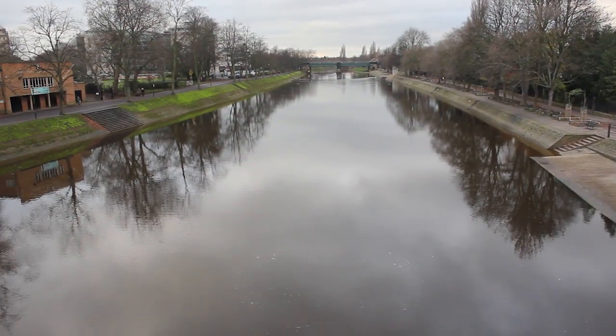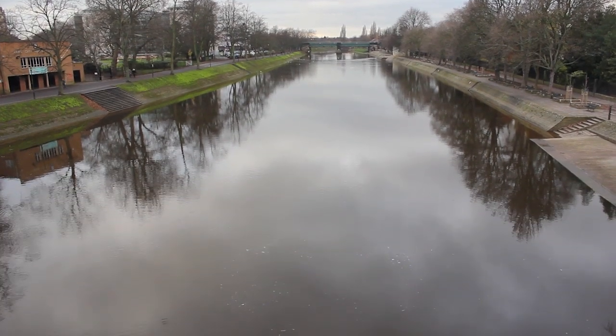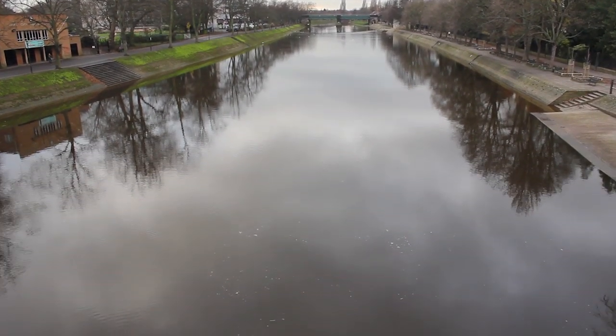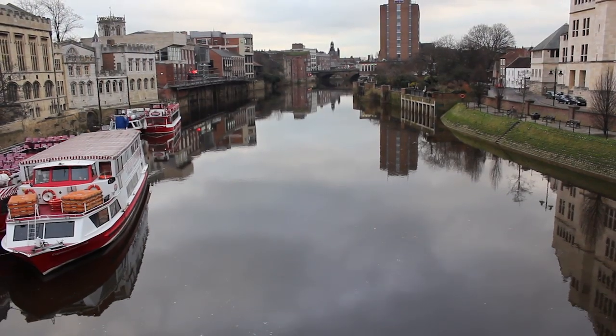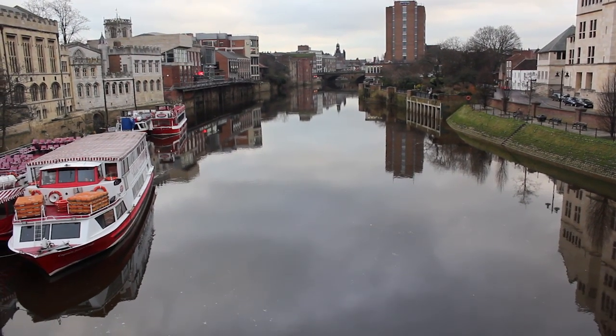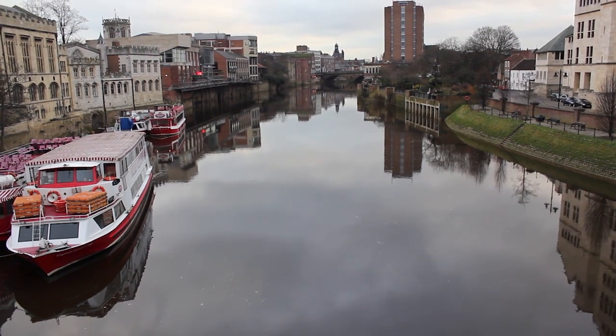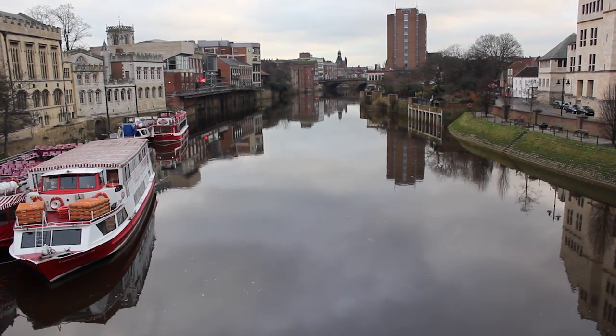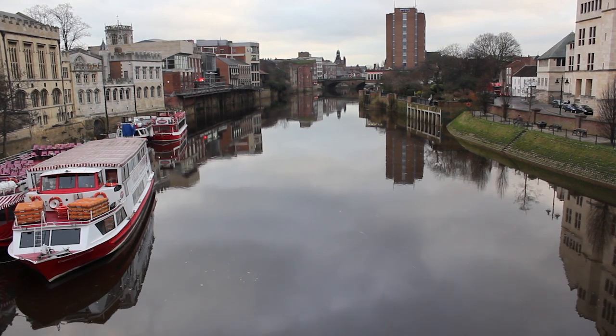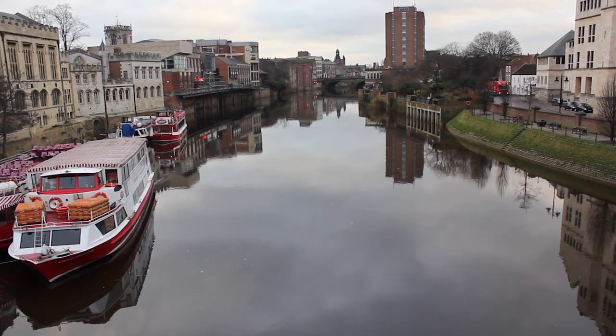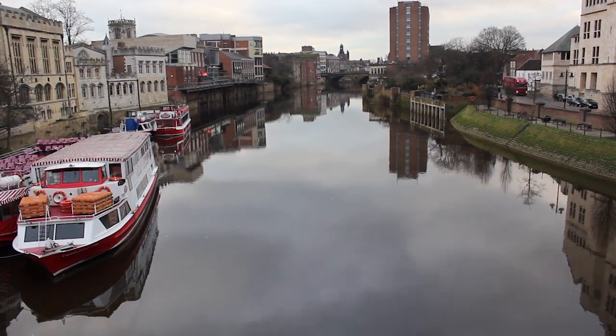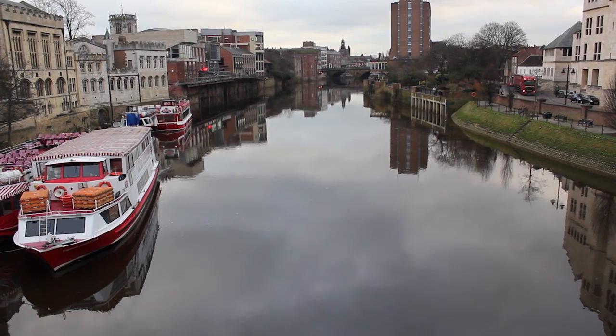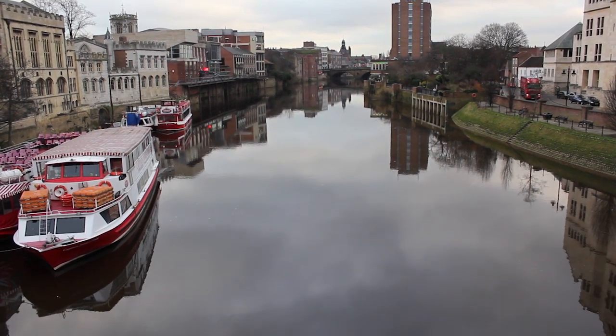So here we are at another river in Europe. This is the river Ouse that's flowing through the center of the city of York in northern England. As you can see, the flow is so smooth that you can barely see any motion at all. You have to look carefully to show that the river is actually flowing. This is an example of pure laminar flow. It's a very slow-moving river, there are no obstructions, and the water surface is completely smooth.